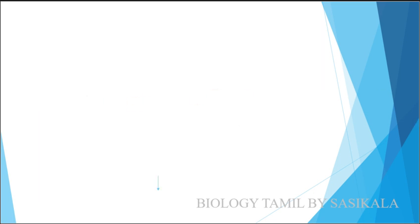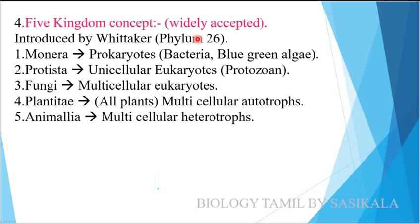Next, the Five Kingdom Concept — the most widely accepted classification. The five kingdoms are: Monera, Protista, Fungi, Plantae, and Animalia. Animalia are multicellular heterotrophs. Fungi are multicellular eukaryotes. Protista are unicellular eukaryotes. Monera are prokaryotes — including Bacteria and Blue-green algae.